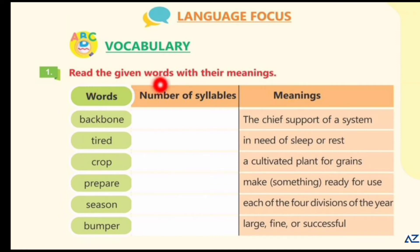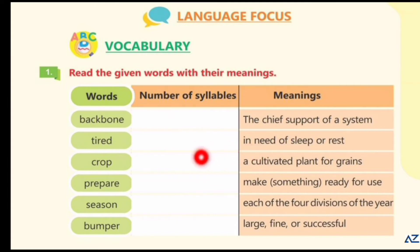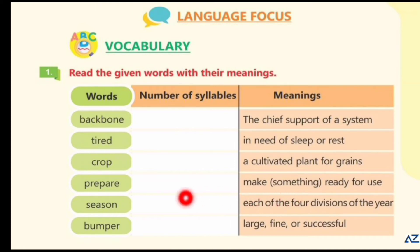Read the given words with their meanings. Backbone — two syllables — the chief support of a system. Tired — one syllable — in need of sleep or rest. Crop — one syllable — a cultivated plant for grains. Prepare — two syllables — make something ready for use. Season — two syllables — each of the four divisions of the year. Bumper — two syllables — large, fine, or successful.